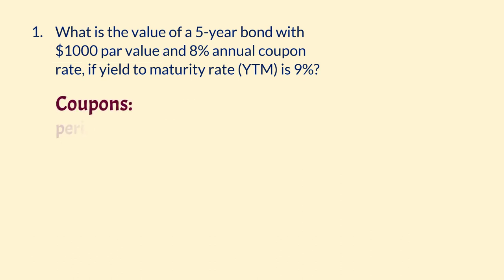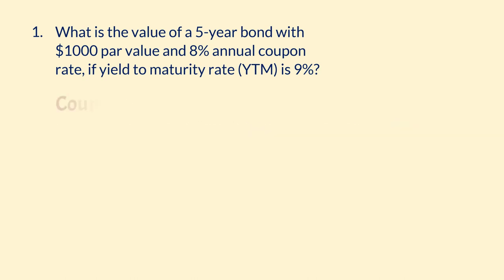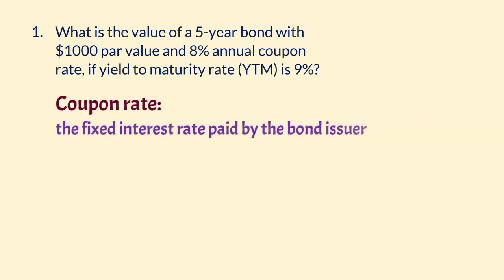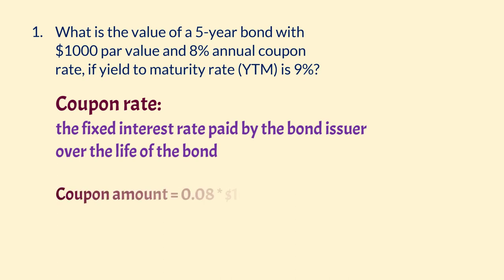Coupons: these are the interest payments made to the bondholder. Coupon Rate: this is the fixed interest rate paid by the bond issuer over the life of the bond. We multiply the par value by the coupon rate to obtain the interest amount in dollars. In this example, the interest in dollars, or coupon, is calculated as 8% of $1,000, which gives $80.